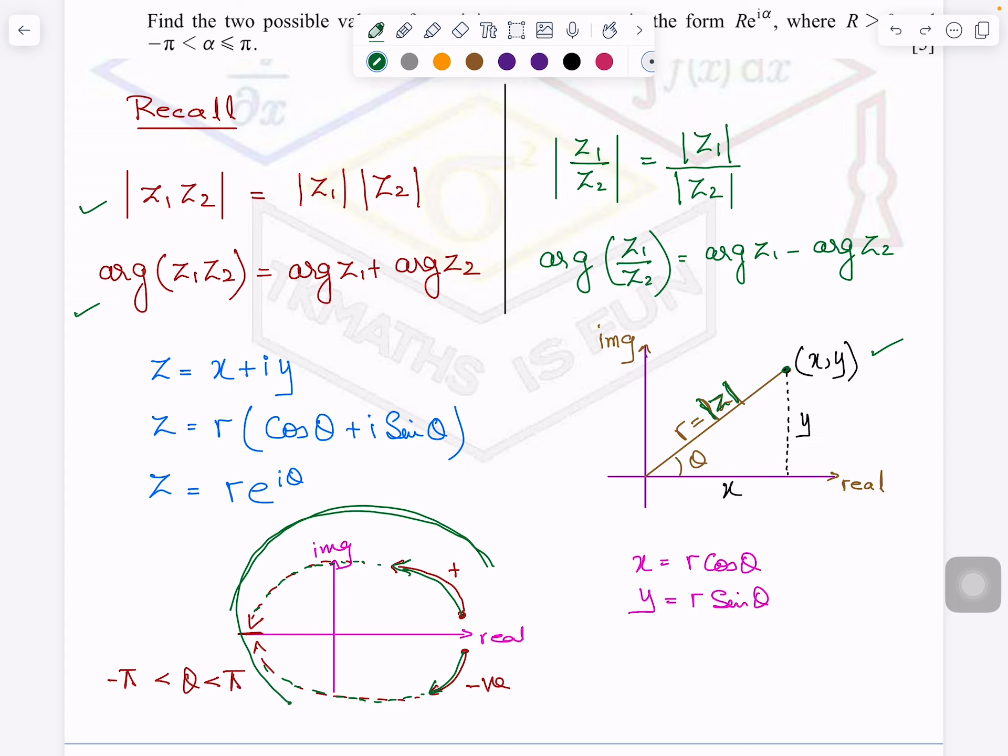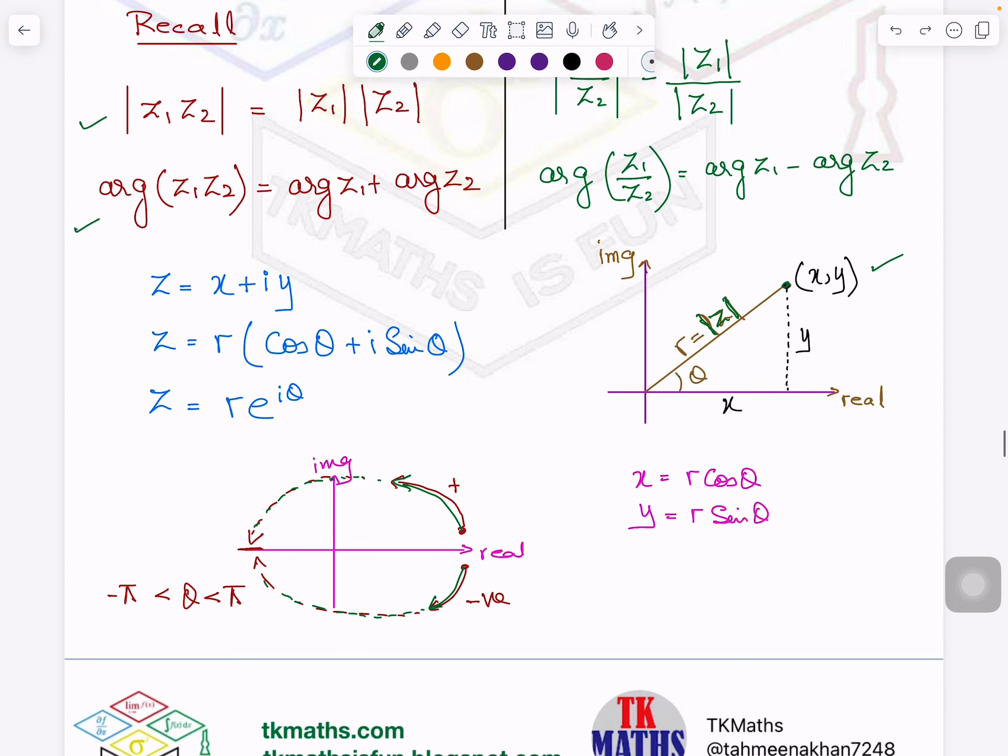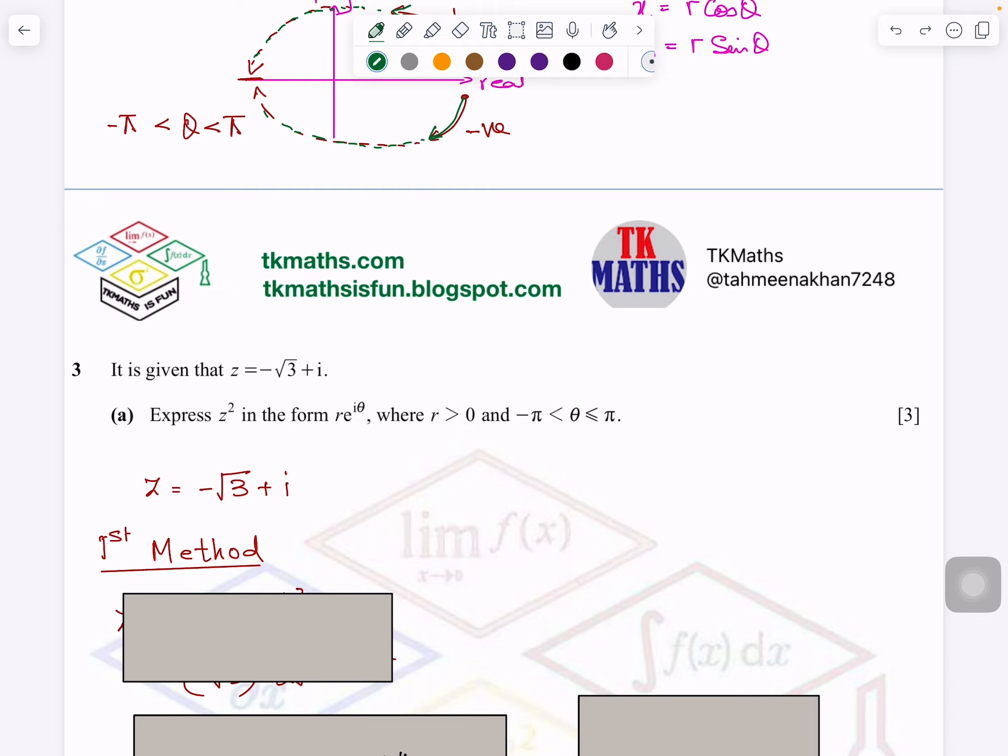So now let's just start the question. So modulus, I have to find out the modulus of Z square and angle of Z square. So first method we are doing here.